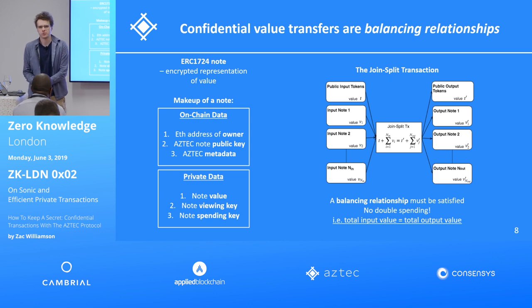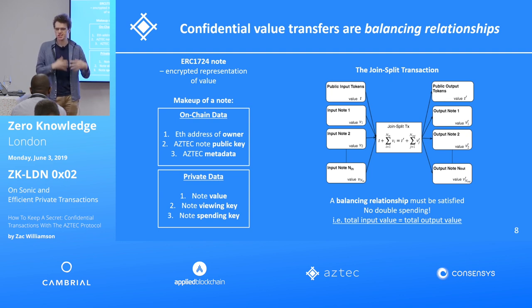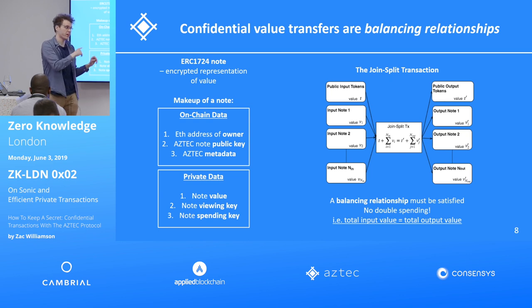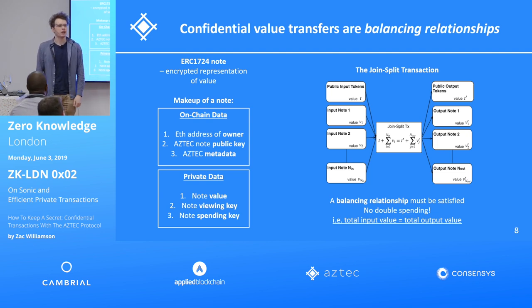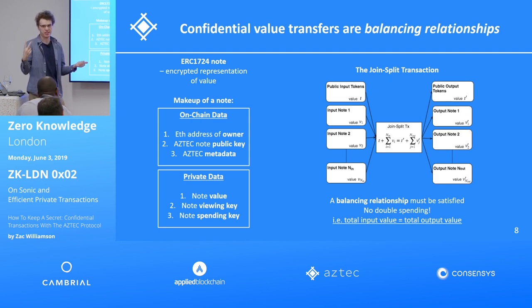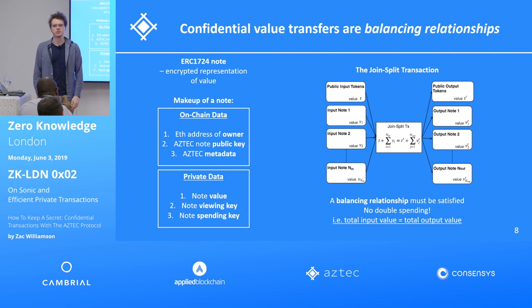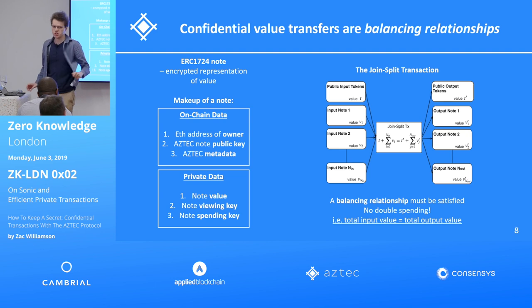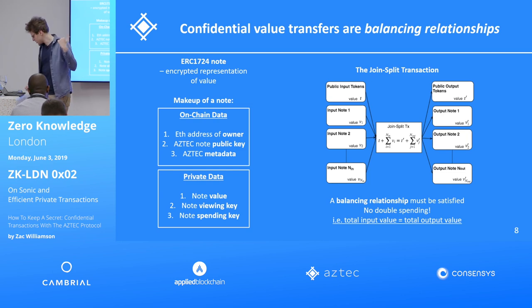Range proofs are critically important. Anybody who's dabbled with homomorphic arithmetic will know that on an elliptic curve, you can perform simple mathematics on encrypted variables — additions, subtractions, some multiplications. However, all arithmetic is modulo a really large prime number. In an encrypted world, a verification smart contract validating homomorphic relationships can't tell the difference between positive and negative numbers. When you're dealing with money, that's a problem — if you have an input note with zero and two output notes worth one and minus one, that's mathematically legitimate, but that minus-one output note is actually worth p minus one, which is roughly two to the 254. You could create more money than exists in the observable universe. You need a range proof to prevent that, and range proofs are traditionally very expensive.